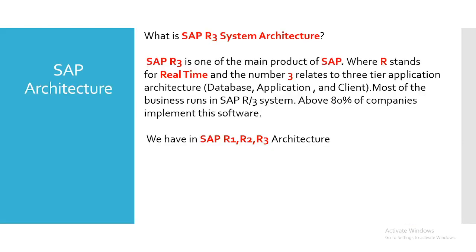Now let's look at SAP architecture. What is the SAP R3 system architecture? SAP R3 is one of the main products of SAP, where R stands for real-time and the number three relates to a three-tier application architecture: database, application, and client. Most businesses run on the SAP R3 system — above 80% of companies have implemented this software.